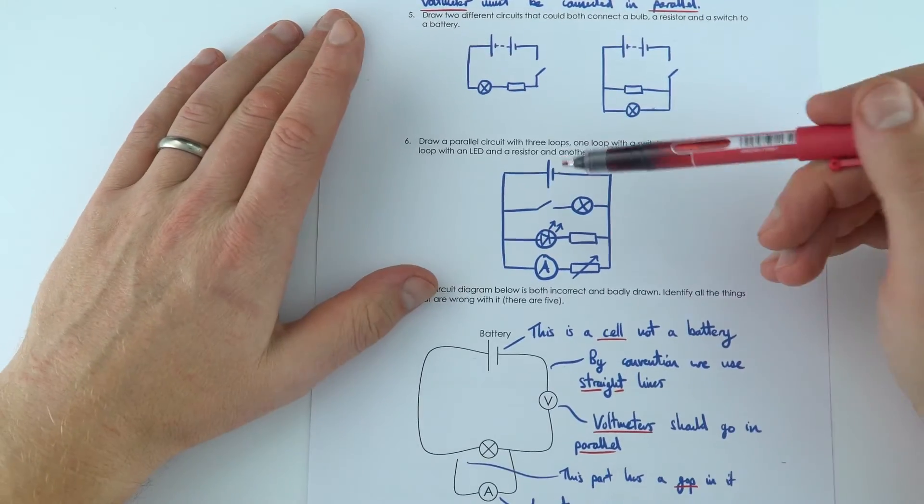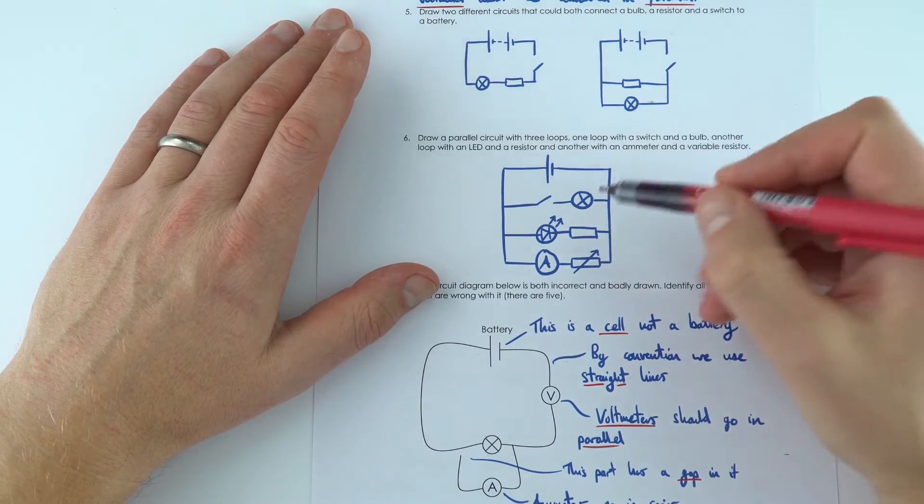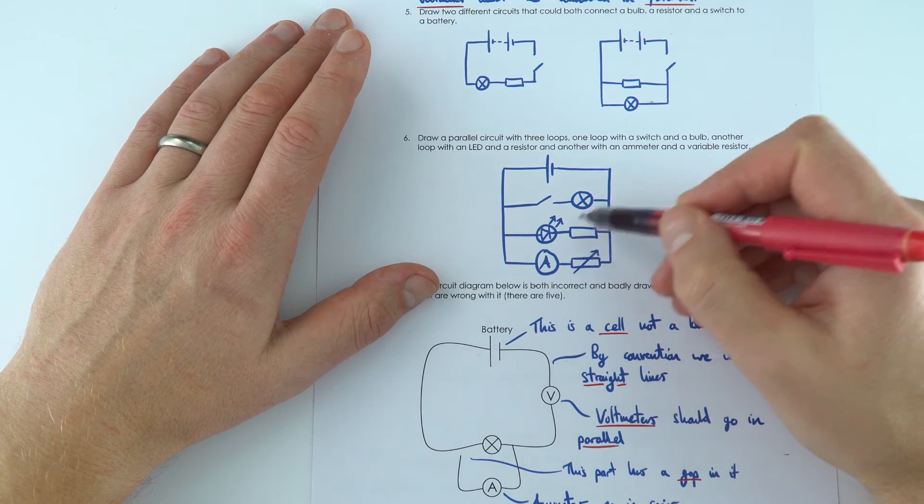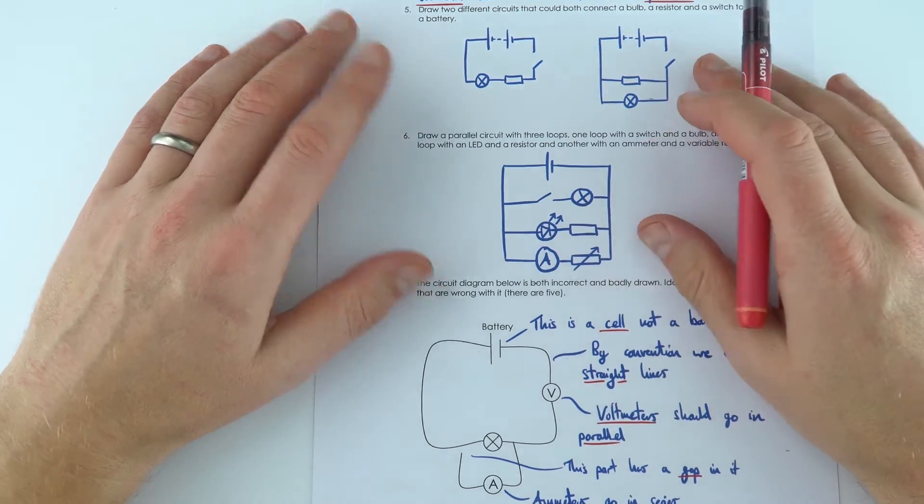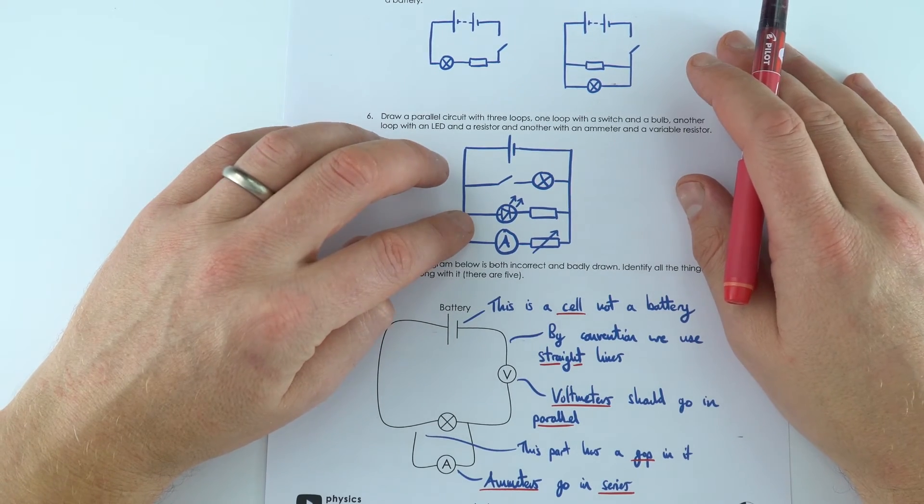Again this one here, we've got a parallel circuit with three different loops and this is just a way to show all of these different bits of equipment that you might have a chance to get hands-on with when you're making circuits at school.